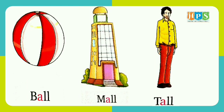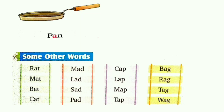B-A-double L, ball. M-A-double L, mall. T-A-double L, tall. Let's read it again: ball, mall, tall. B-A-N, fan. B-A-N, fan.